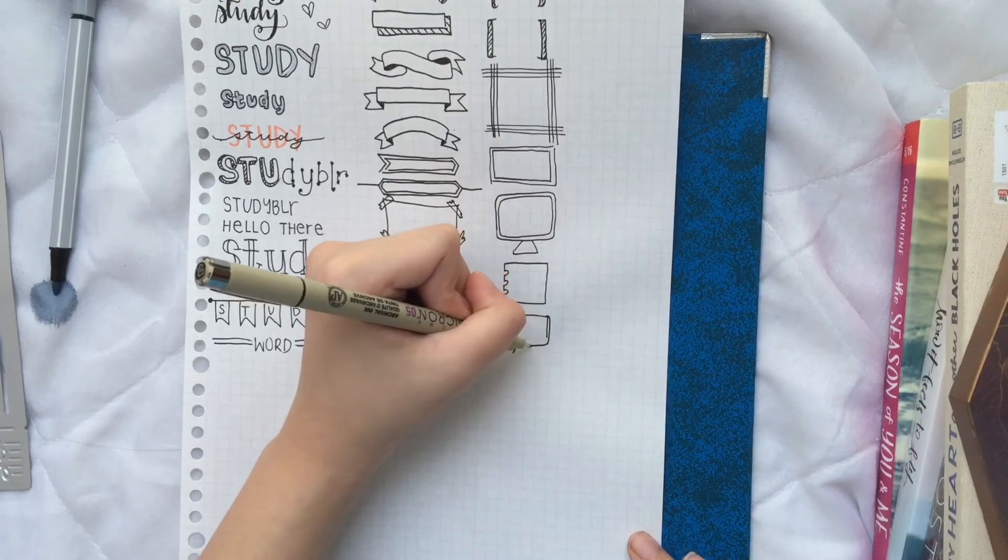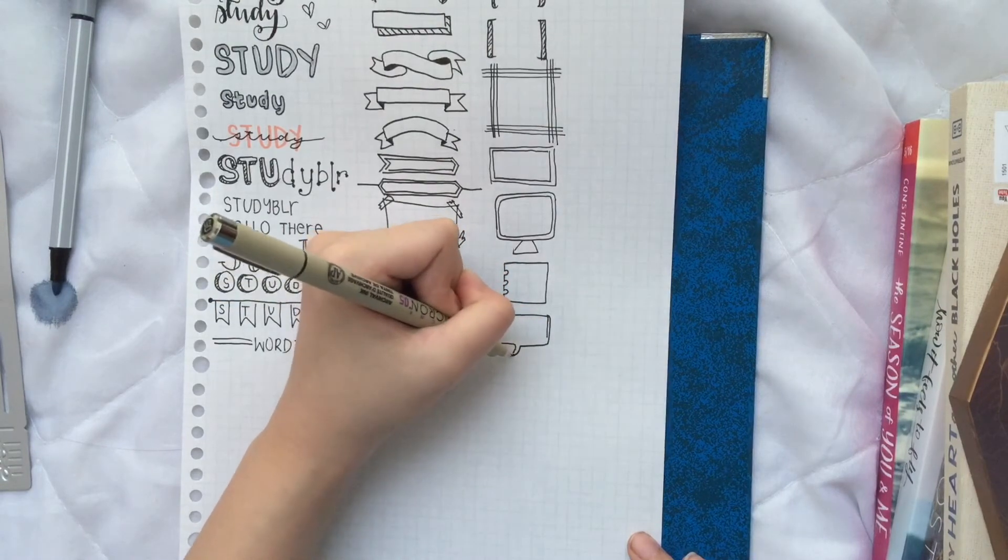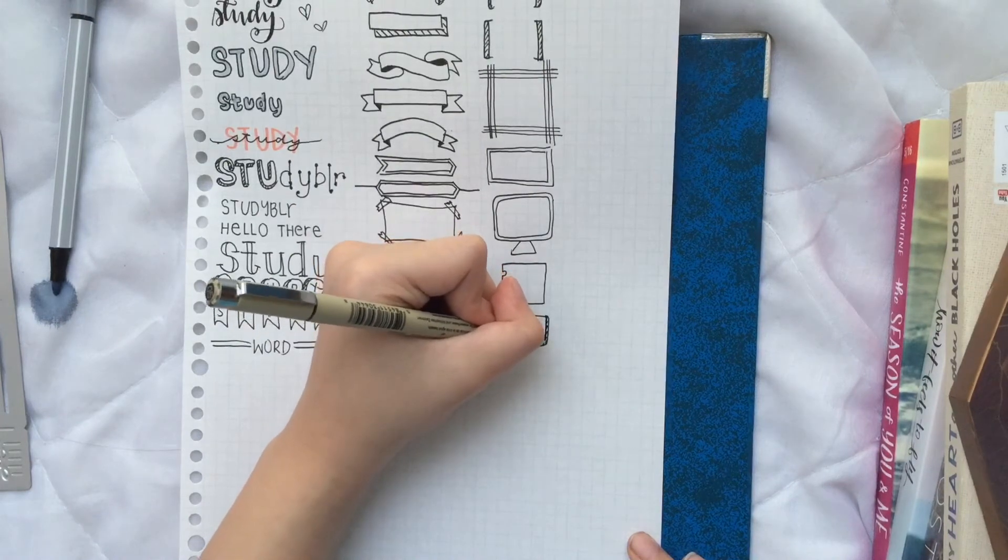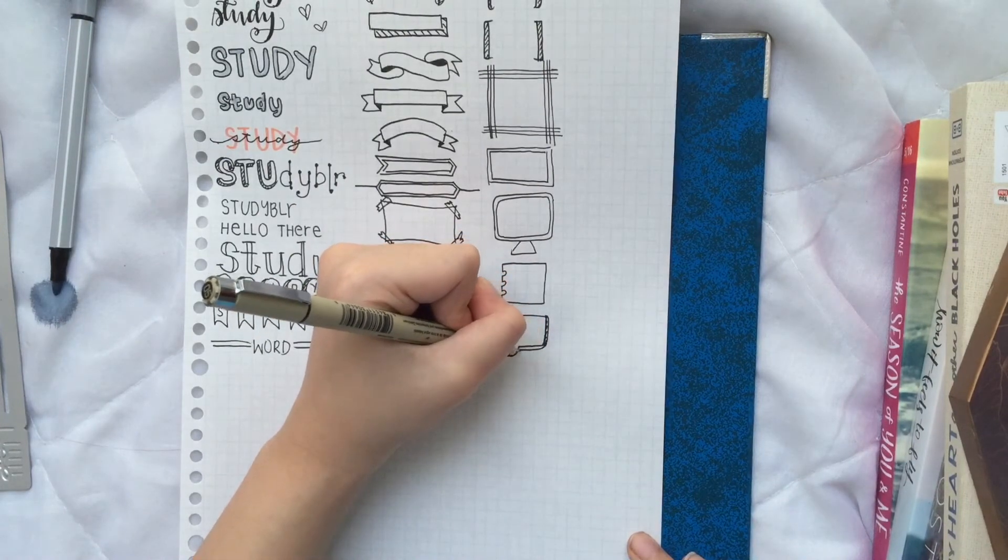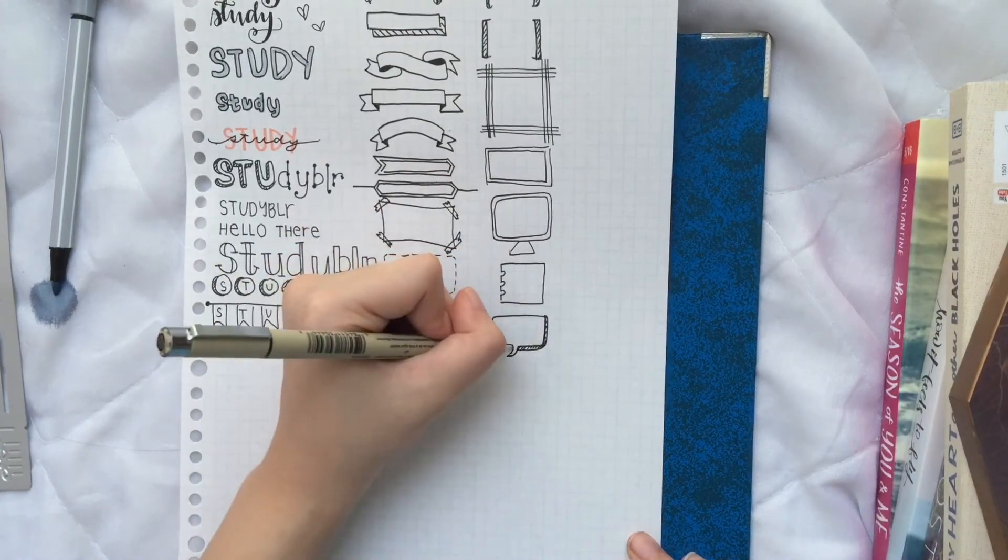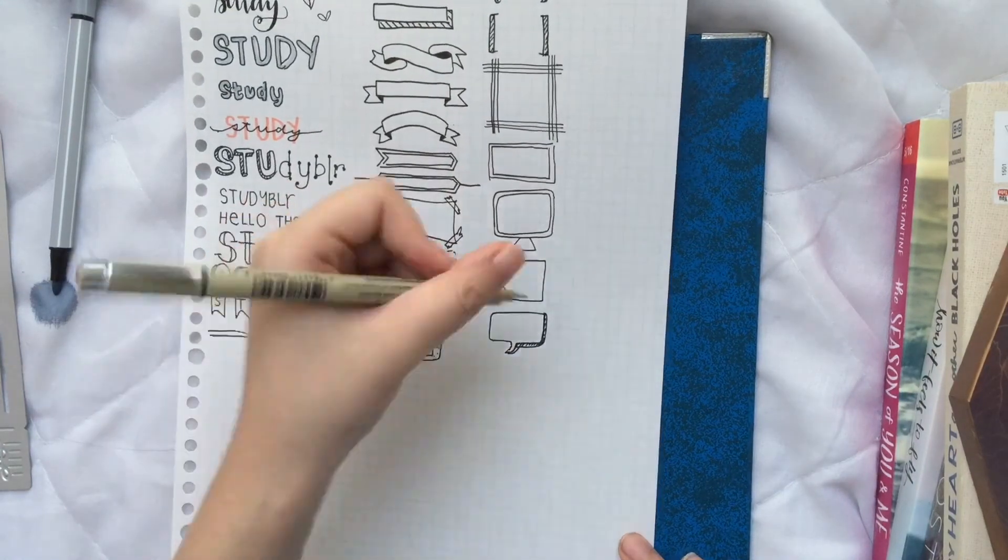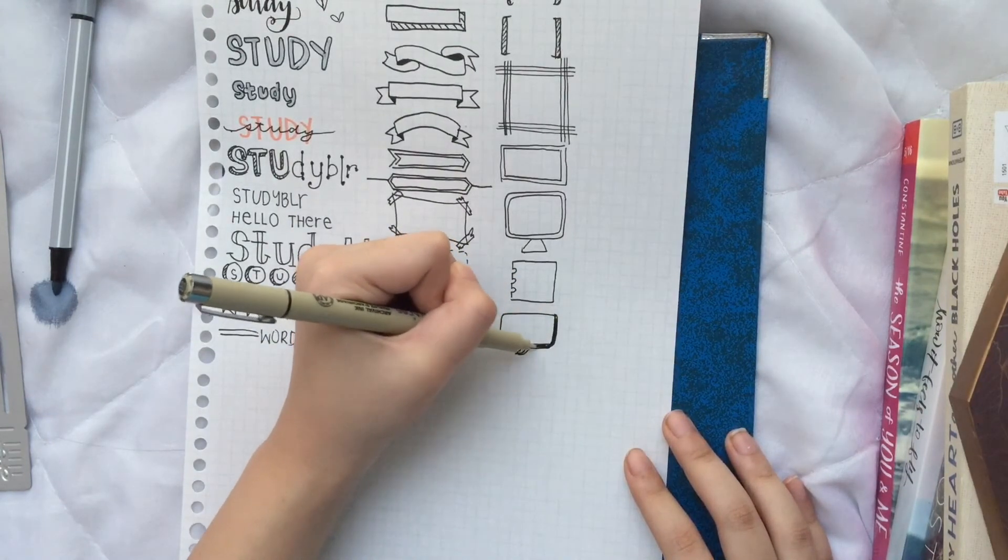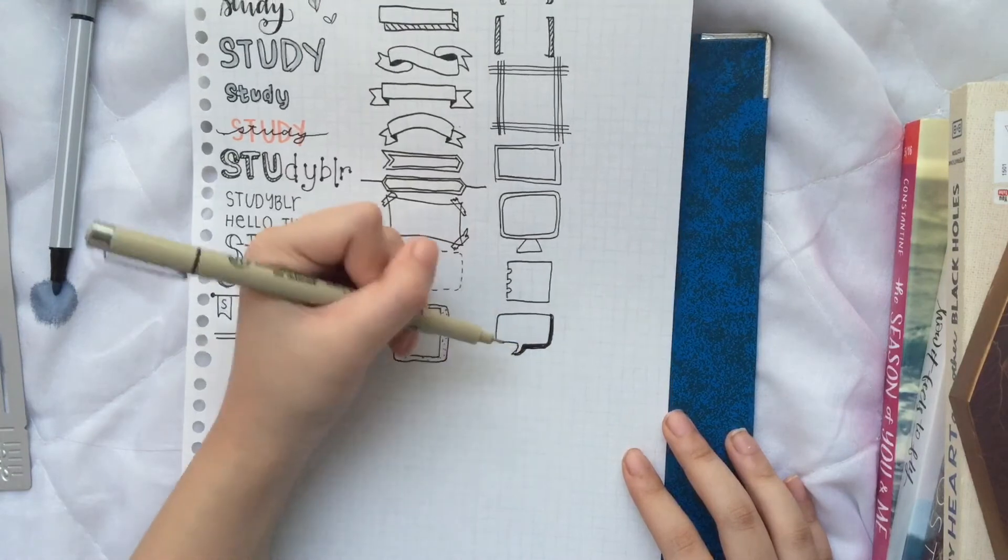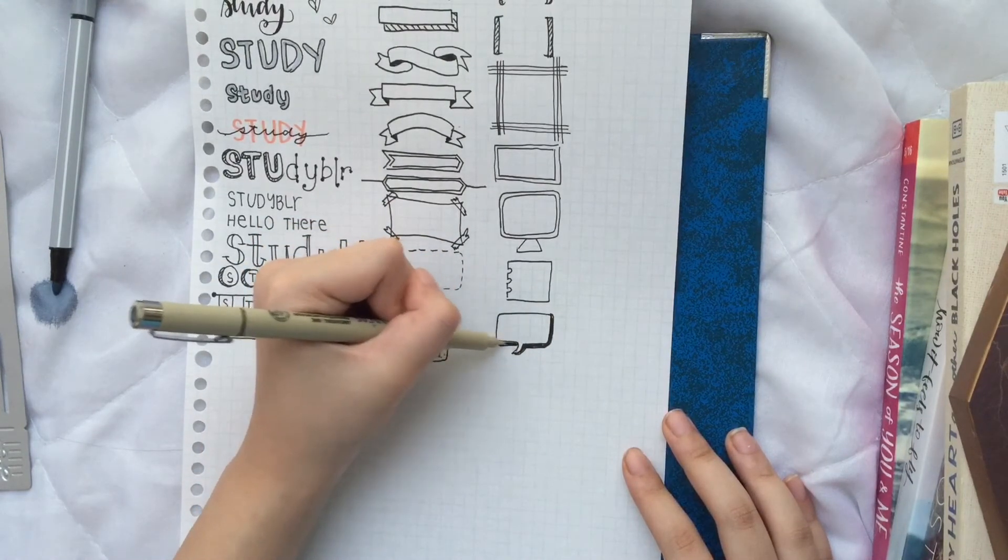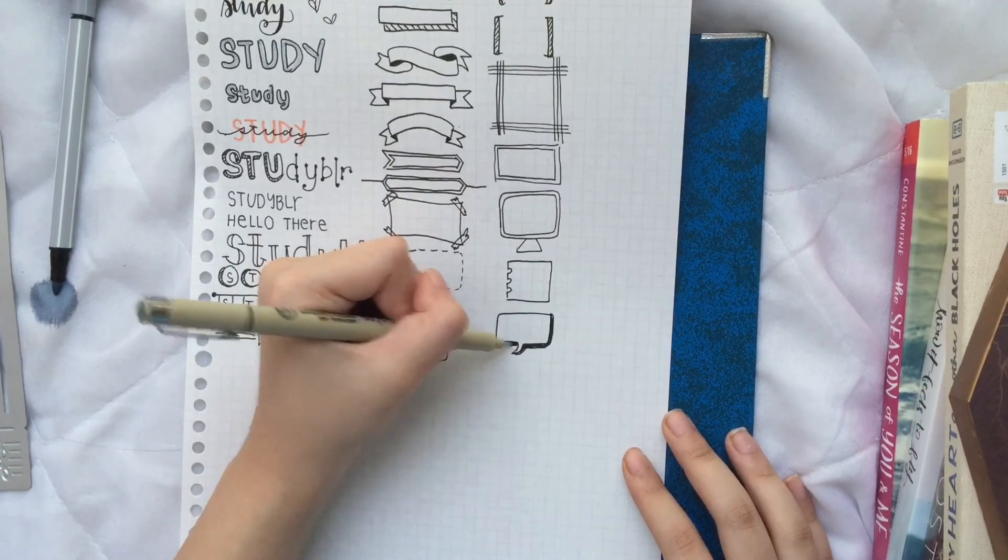And then you can also use speech bubbles. Oops. Oh well. And then you can always use the shadow. Okay, so since I've made a lot of mistakes on this one, I'm just going to shade that in so that the mistakes won't be noticeable.